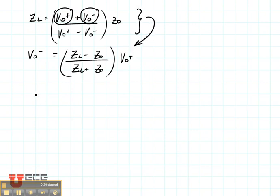Another way to write that is that V0 minus divided by V0 plus is ZL minus Z naught over ZL plus Z naught.